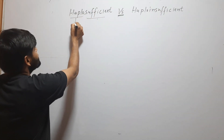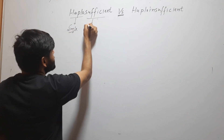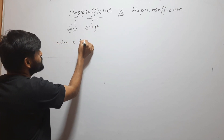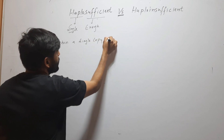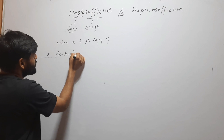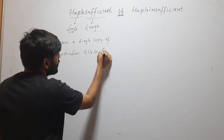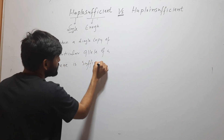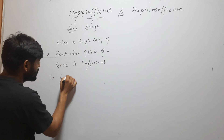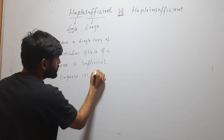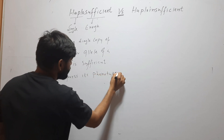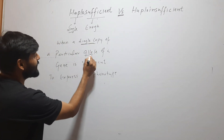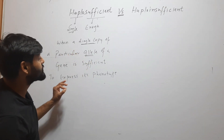Haplo means single. Sufficient means enough. So when a single copy of a particular allele of a gene is sufficient or enough to express its phenotype, then it will be called haplosufficient.